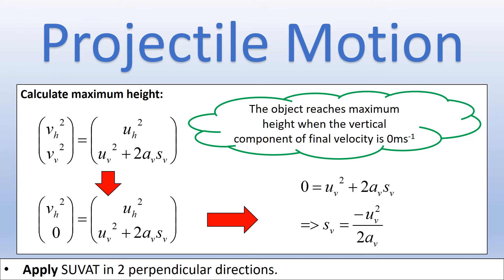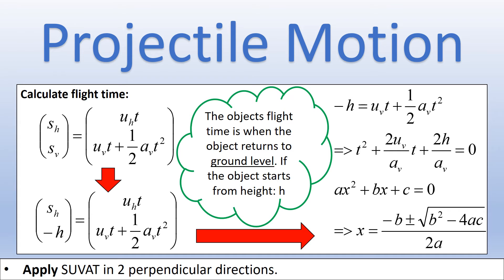Similarly, the maximum height an object reaches is not dependent on horizontal motion at all. Maximum height occurs when the vertical component of velocity is zero. Substituting that condition gives an expression for maximum height purely in terms of vertical quantities. The horizontal distance, or range, depends only on the initial horizontal velocity and the flight time.